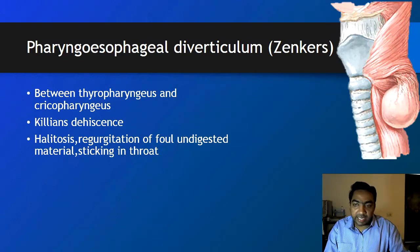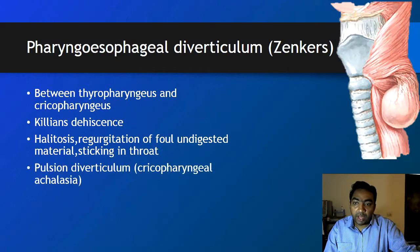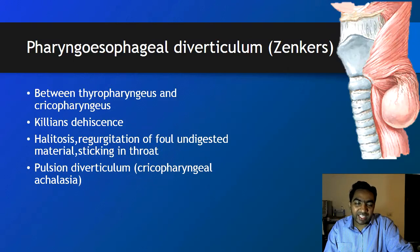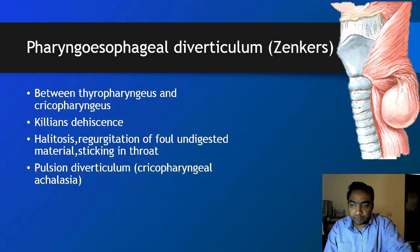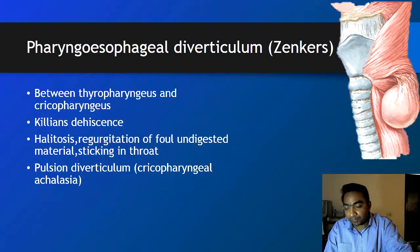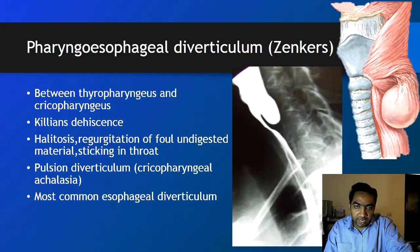The cricopharyngeal diverticulum is a pulsion diverticulum — only the mucosa comes out. It is also due to cricopharyngeal achalasia: due to tight spasm of the cricopharyngeus, the mucosa is forced through the defect above. It is the most common esophageal diverticulum. You can see the barium swallow image here showing this Zenker's diverticulum.